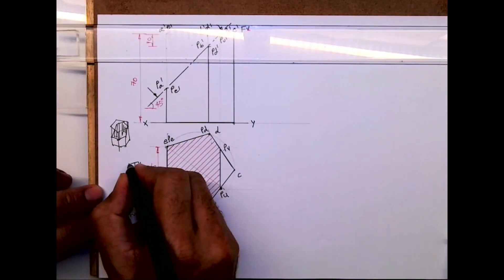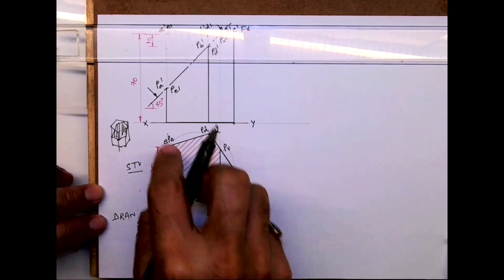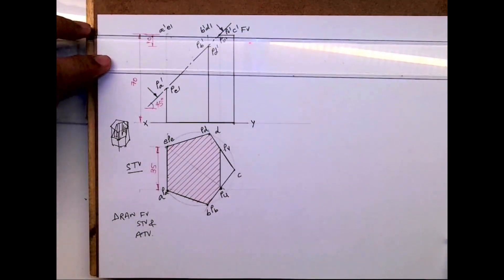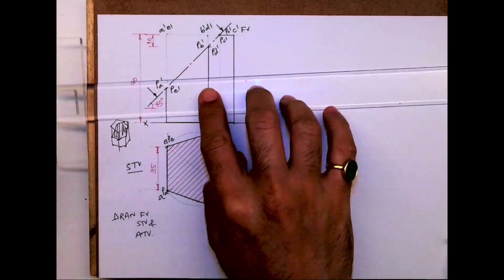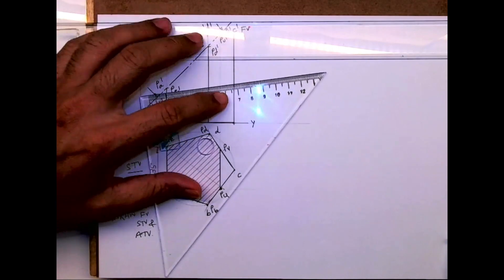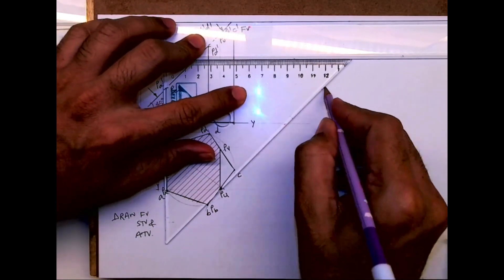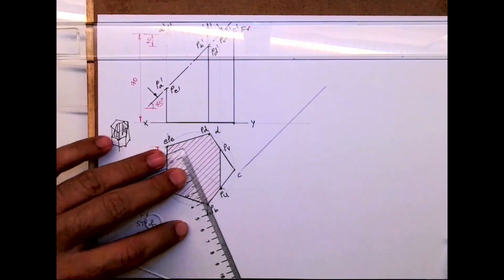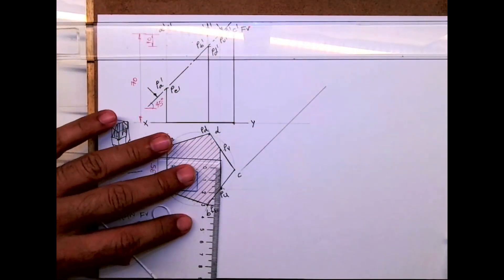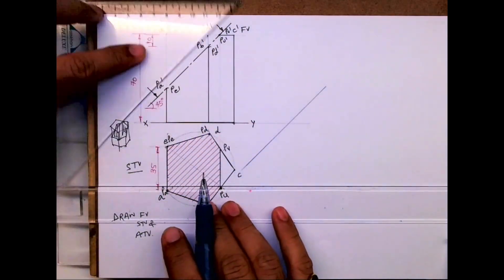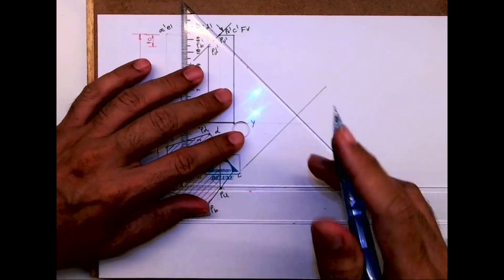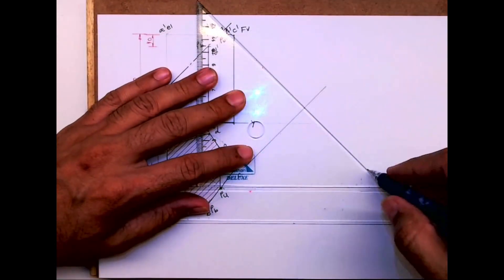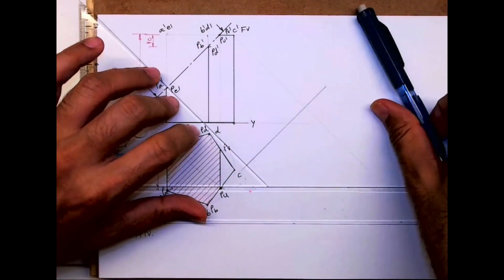Now I will draw the sectional top view. Next we have to draw the auxiliary top view. For that, first we will draw the auxiliary plane which is inclined at 45 degrees, and then we will draw 45 degree lines from the object.